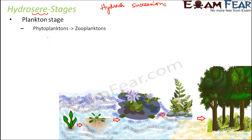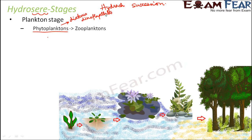The first stage would always be the pioneer stage — the first life forms which develop in the ecosystem. In hydrosere, the pioneer stage consists of phytoplanktons. They are very small autotrophic organisms. Since most pioneer species are photosynthetic, phytoplanktons are also photosynthetic and able to prepare their own food. Examples include diatoms and dinoflagellates. Spores of these organisms reach the water body by wind and spread rapidly.